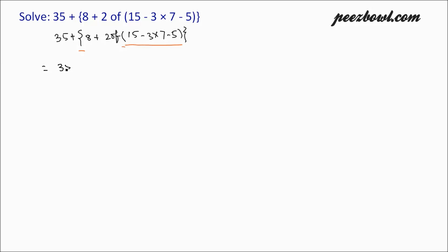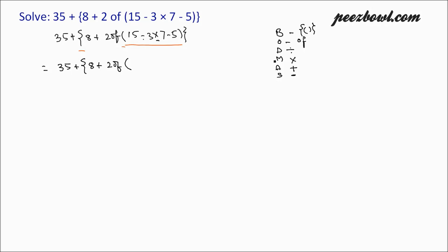Let us write it again: 35 plus 8 plus 2 of round bracket. Inside the round bracket, we have subtraction and multiplication. When it comes to subtraction and multiplication, we need to perform multiplication first — this is the BODMAS rule: B is for Bracket, O is for Of, D is Division, M is Multiplication, A is Addition, and S is Subtraction. As you can see, multiplication comes before addition and subtraction.